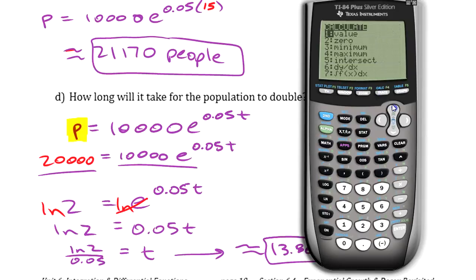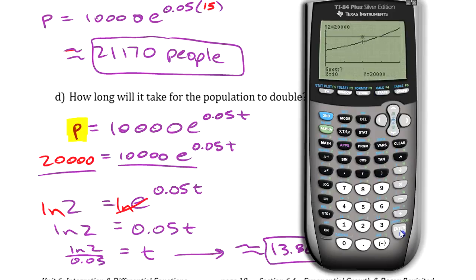Using the calc menu — intersect, first curve, second curve — there's our guess, and there's our intersection point: 13.86 years, roughly, to get to 20,000. That's graphical confirmation of what you found algebraically.